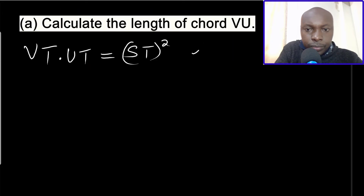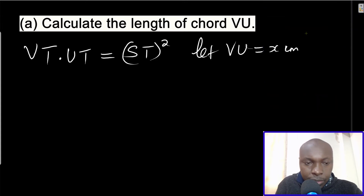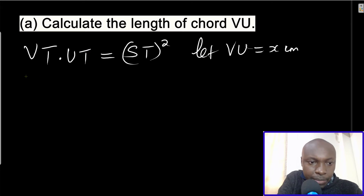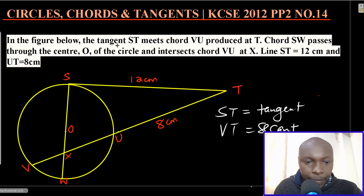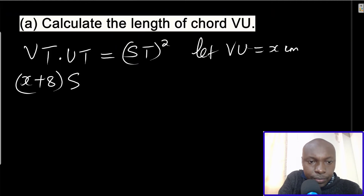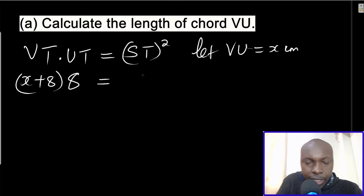Since we have UT and ST given, we can get VU. Let VU be x centimeters. Therefore VT will be x plus 8, since VU is x and UT is 8 centimeters. UT is given as 8.